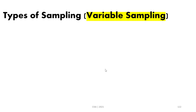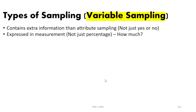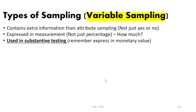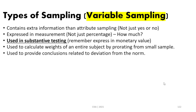Variable sampling contains more information than attribute sampling — we are not just describing yes or no, but using many attributes. It is expressed as a measurement, not a percentage, answering 'how much.' Variable sampling is used in substantive testing, which is expressed in monetary value, and it is used to calculate the weight of an entire subject by creating a small sample. It is also used to provide conclusions related to deviation from the norm.